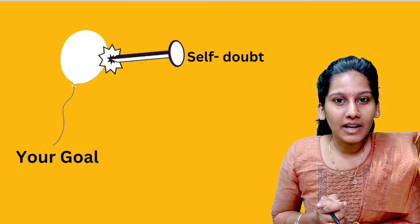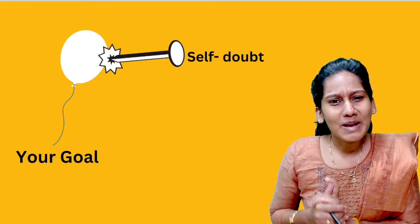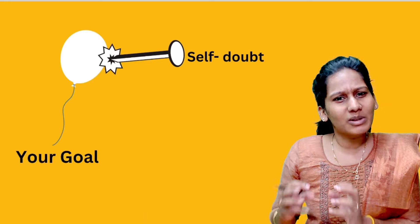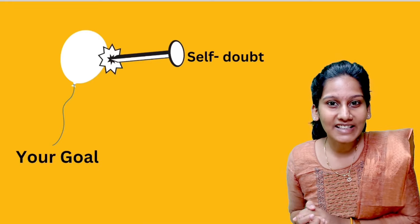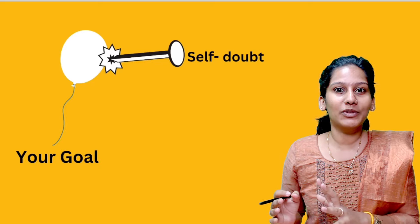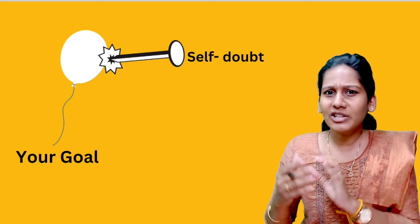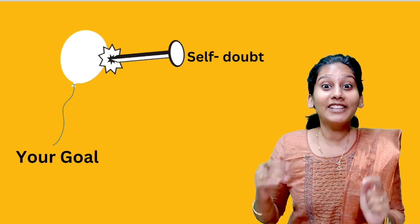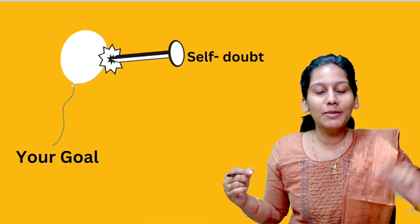In this chapter, we only learn 3 chapters. We have a lot of questions about this, so we have to learn. If we have self-doubt, we can learn how to learn. We can learn how to learn, but we know how to affect our goal.